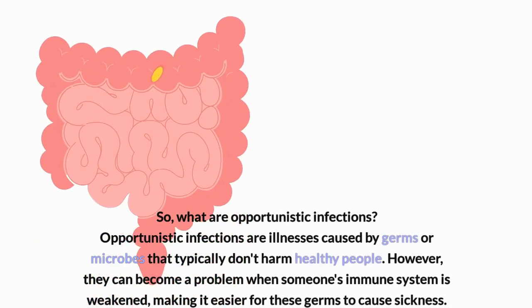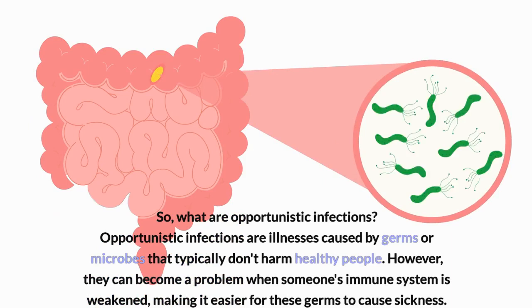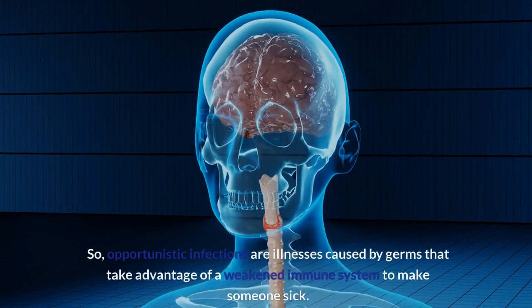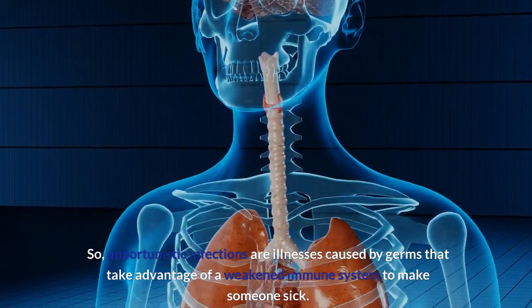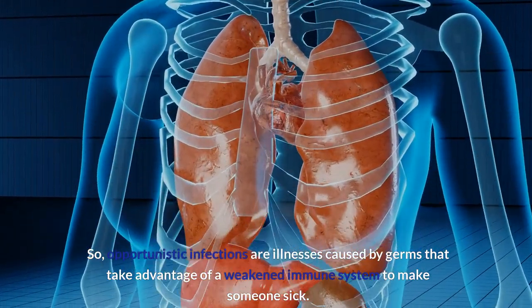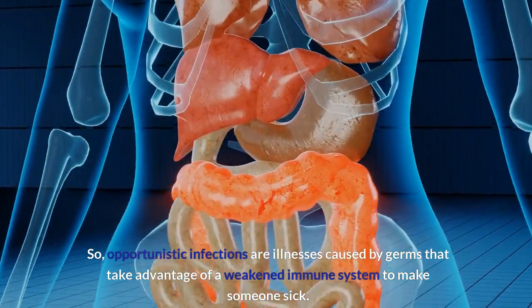What are opportunistic infections? Opportunistic infections are illnesses caused by germs or microbes that typically don't harm healthy people. However, they can become a problem when someone's immune system is weakened, making it easier for these germs to cause sickness — essentially, they take advantage of a weakened immune system.